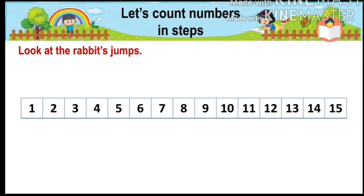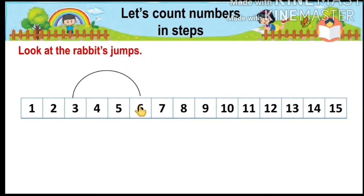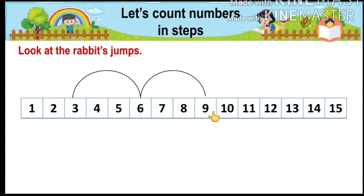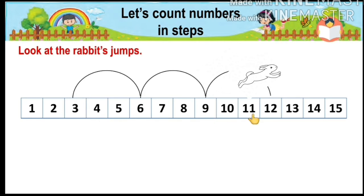Now look at the rabbit's jump. The rabbit starts jumping from number three and goes to the next number, six. The rabbit has to go one, two, three steps forward. Again he jumps and goes to the next number, nine — it means one, two, three steps forward. Again he goes to the next number, twelve. We count one, two, three steps forward.